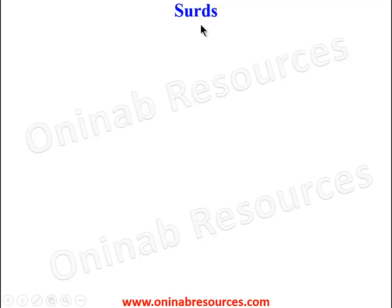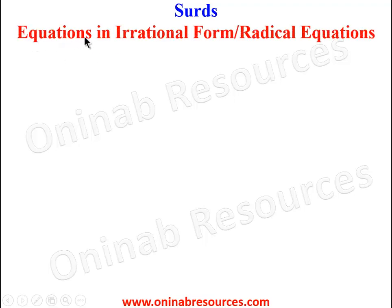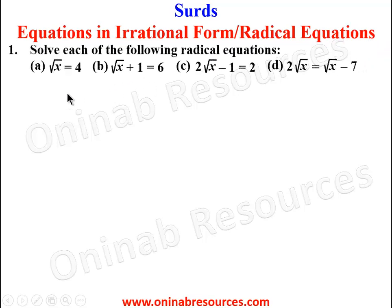Hello out there, welcome to this tutorial on SORDS. In this video we'll be looking at equations in irrational form, or radical equations. We start with Problem 1: solve each of the following radical equations. (a) √x = 4, (b) √x + 1 = 6, (c) 2√x − 1 = 2, and (d) 2√x = √x − 7.